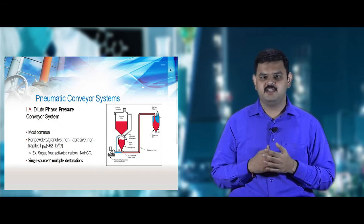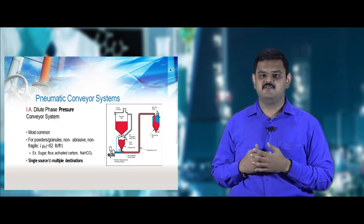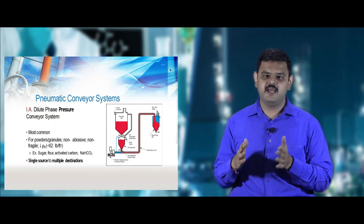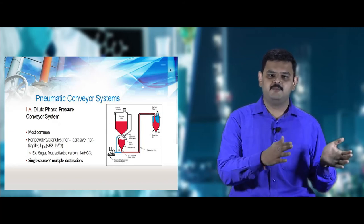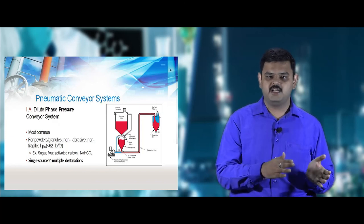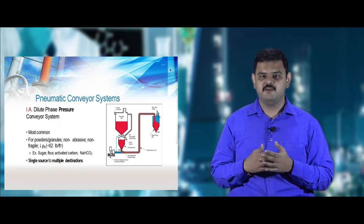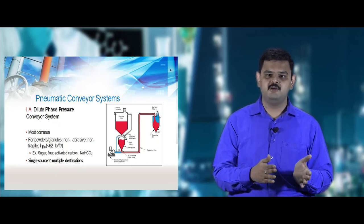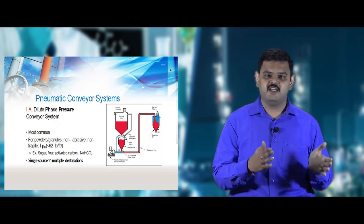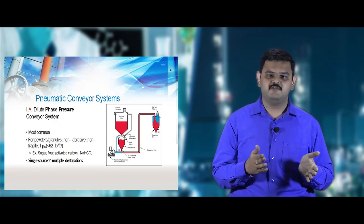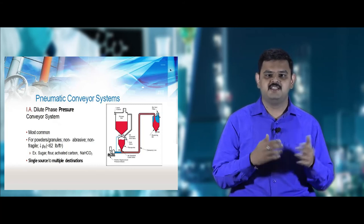Dense and dilute phase pneumatic conveyors operate in a closed circuit. In vacuum phase conveyors, multiple inputs are sucked to a single output. Pressure phase conveyors carry materials from one input to multiple outputs, allowing storage in different areas. The packaging industry is mostly based on pneumatic conveyors using bins or silos, where the output is transferred to multiple packaging areas for packing different size materials.